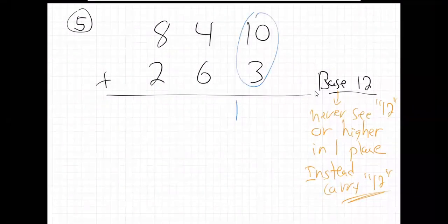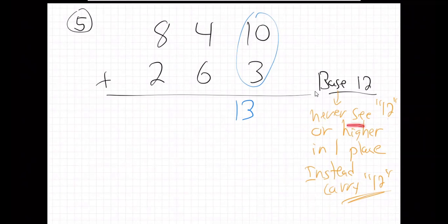So 10 and 3 is 13. I can't have 13. Right? Because you can't have 12 or higher in any one place. Can't do that. So what do you do? You cross that out and you carry.